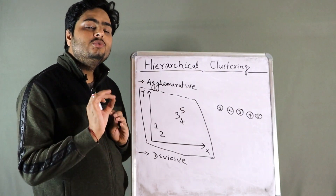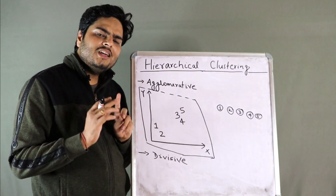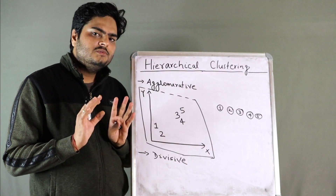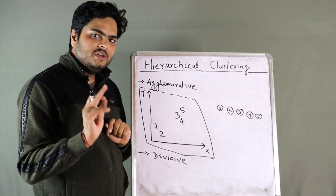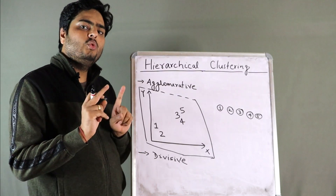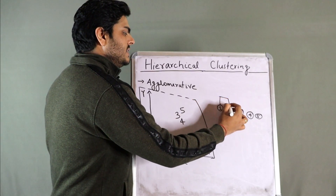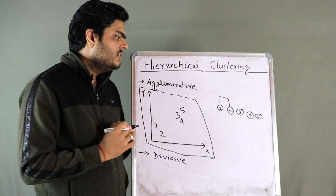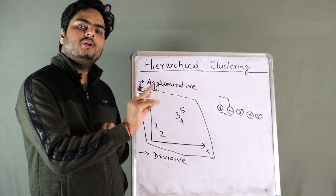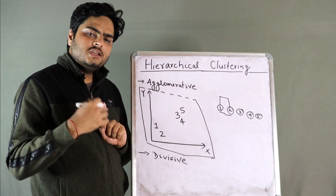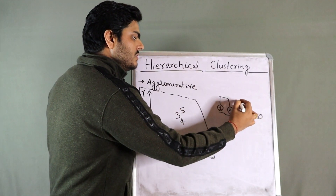Now what it will do is try to reduce the number of clusters. It will see, out of all these clusters, can I merge two clusters? By the distance — I will go to the mathematical details later — it sees that one and two are closer, so it will merge one and two. Now how many clusters do we have? Four clusters. We started with five, now we are at four. In the next iteration, it will see: can I merge three and four together? If yes, it merges them.